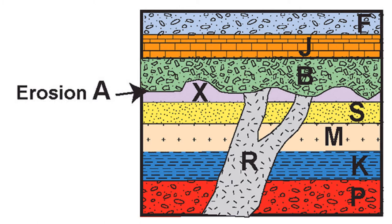In this example, notice how the intrusive rock R was eroded away along with the sedimentary rock layer X. Once sedimentation resumed, the new rock B formed on top of both R and X. We call this a cross-cutting relationship.